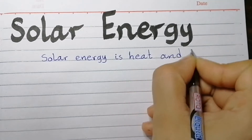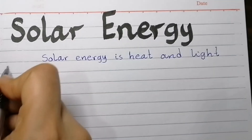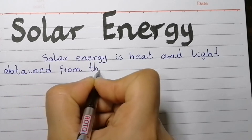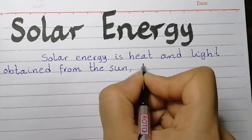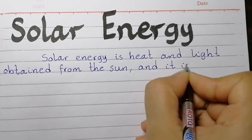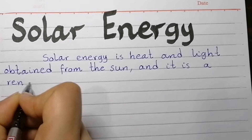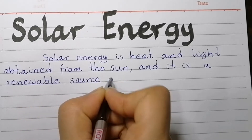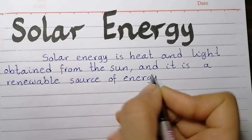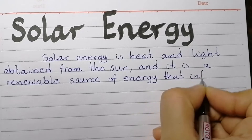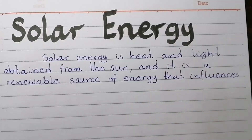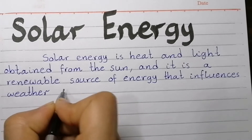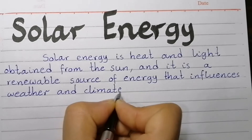Solar energy is heat and light obtained from the Sun, and it is a renewable source of energy that influences weather and climate on Earth.